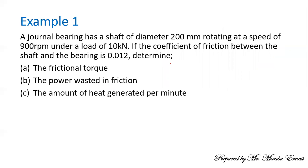Here is Example 1 for a journal bearing. We are told the shaft has a diameter of 200 mm rotating at 900 rpm. The load acting on the shaft is 10 kilonewtons. The coefficient of friction between the shaft and the bearing is 0.012. We need to determine: the friction torque, the power lost in friction, and the amount of heat generated per minute.